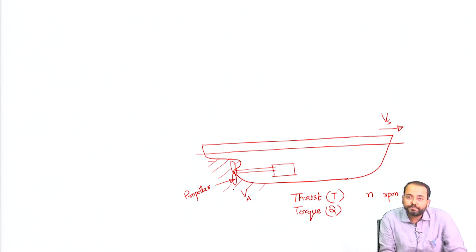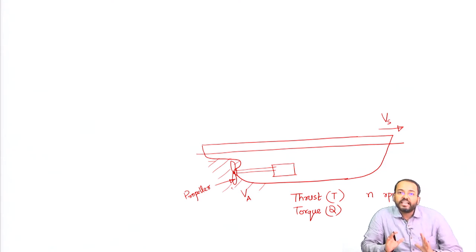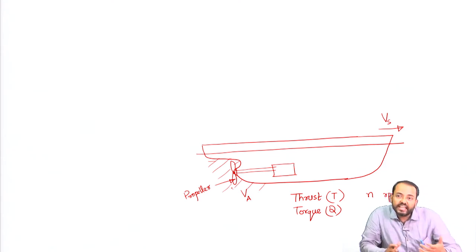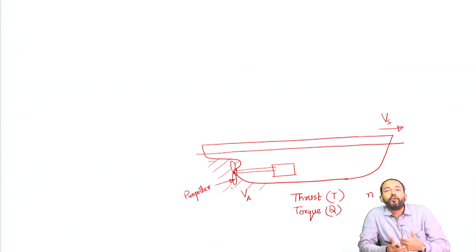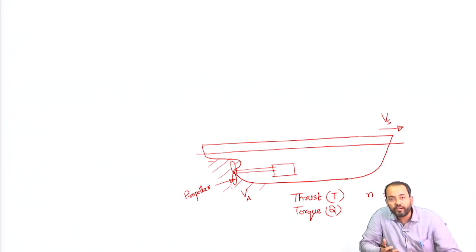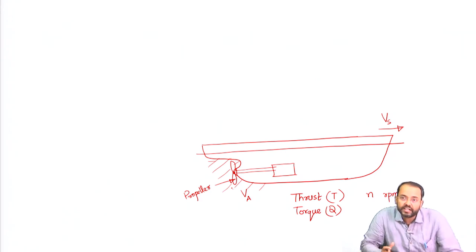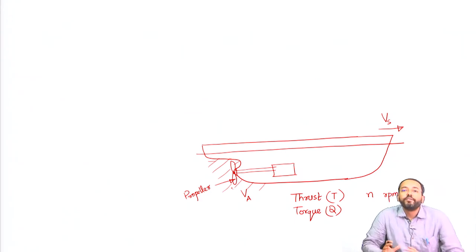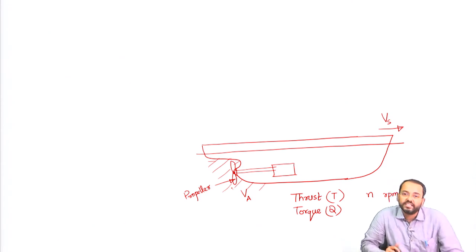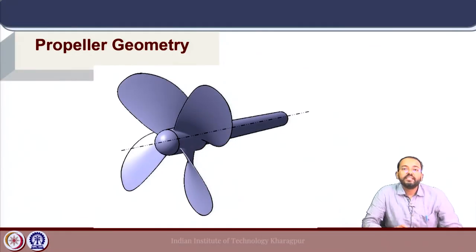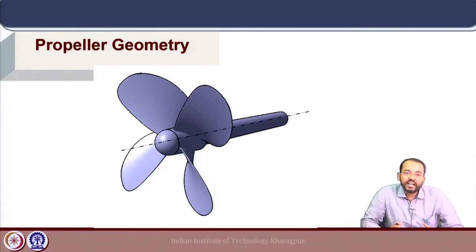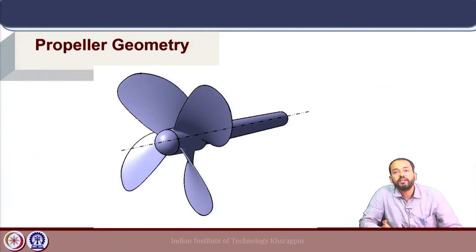The specific location of the propeller behind the ship is taken as a basis for ship propulsion. As we cover the different aspects of propeller characteristics as well as hull-propeller interaction, we will understand why this is the optimal location for a propeller. This is the geometry of a standard screw propeller, where a set of blades are mounted on a central structure called the boss or hub, which is connected by shaft to the marine engine.